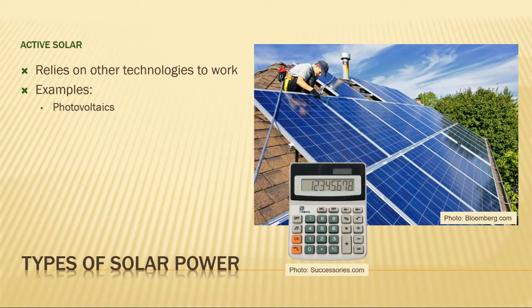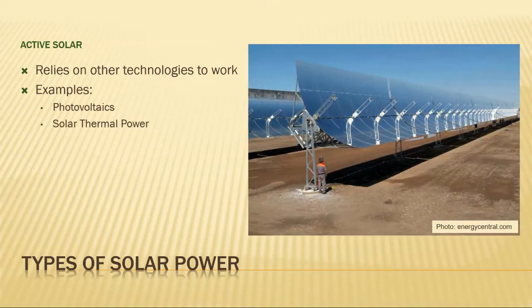This is the same technology that powers most desktop calculators. Another form of active solar power is called solar thermal. It uses concave mirrors to focus sunlight onto a tube filled with oil. The sunlight superheats the oil, which is used to heat water into steam that powers a turbine and generates electricity, much like a coal or natural gas power plant would, but instead of using fossil fuels to provide the heat, the sun is used instead.